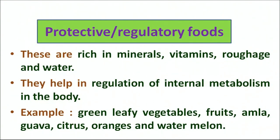Another category is protective or regulatory foods. These include vitamins, minerals, water, and roughage. The basic purpose of this category is to protect our body from different infections and regulate the internal metabolism in the body. Examples are fruits, green leafy vegetables, amla, watermelon, orange, and citrus fruits.